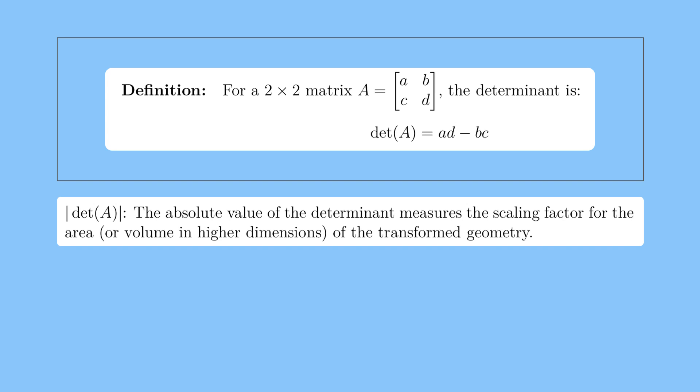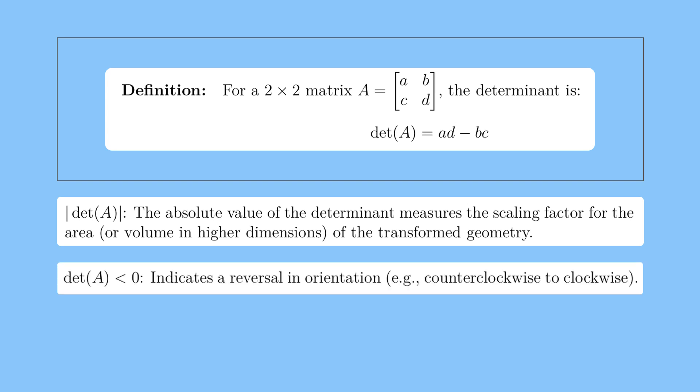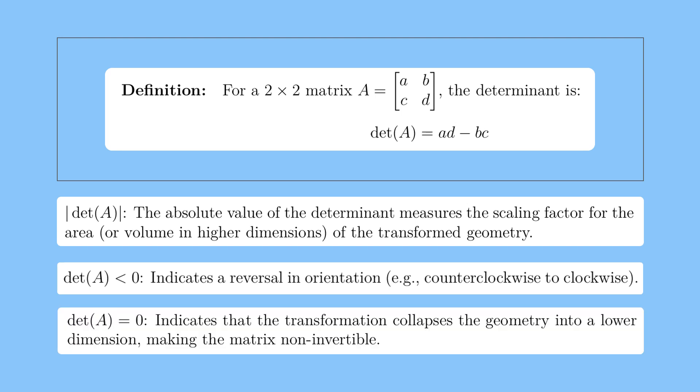The absolute value of the determinant reveals how much the area is scaled during the transformation. A negative determinant signifies a change in orientation, such as a shift from counterclockwise to clockwise tracing. A determinant of zero indicates that the transformation collapses the geometry into a lower dimension, rendering the matrix non-invertible.